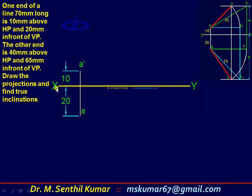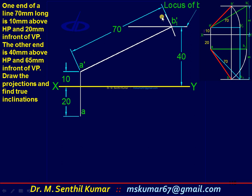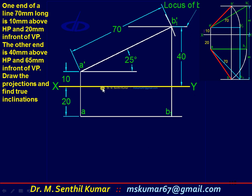As the first step, draw the XY reference line and mark one end 10 above and 20 in front. Then draw a locus 40 above HP — on this locus, the points B-dash and B1-dash must lie. Using true length 70 as radius with A-dash as center, cut the arc to get A-dash B1-dash, which is the true length. Measure this angle — that is theta. Then complete the preliminary front view set.